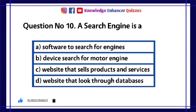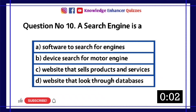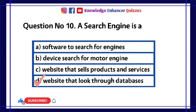Question number 10. A search engine is. A software to search for engines. B device search for motor engine. C website that sells products and services. D website that look through databases. Option D is the right answer.